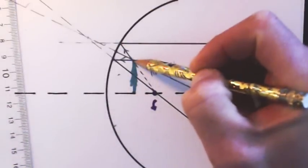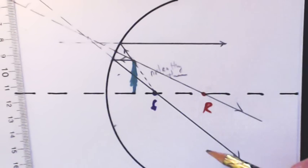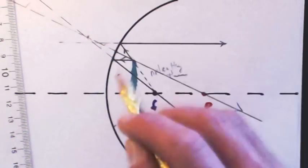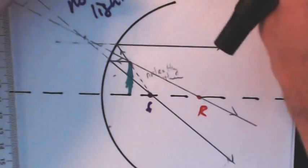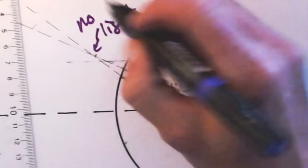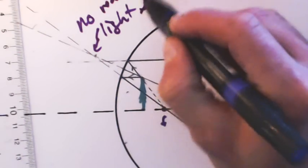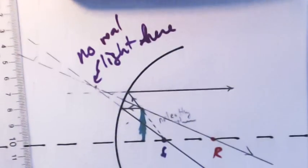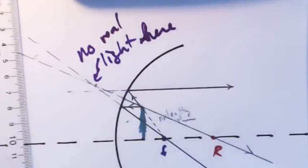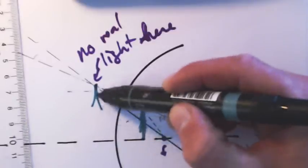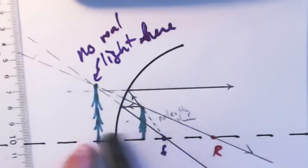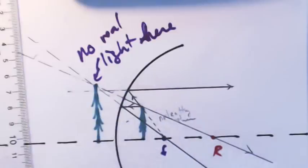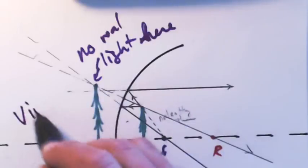So light from the top of the tree gets spread out. But it acts like it's coming from here. There's no light here. There's no light there. There's no real light here. No real light there. There's no real light here. So when I go to draw my tree, I just draw it normally. This is the top of the tree. The bottom of the tree is on the axis. So look, my image of this tree is now larger and spread out. But it's not real. It's what's known as a virtual image.